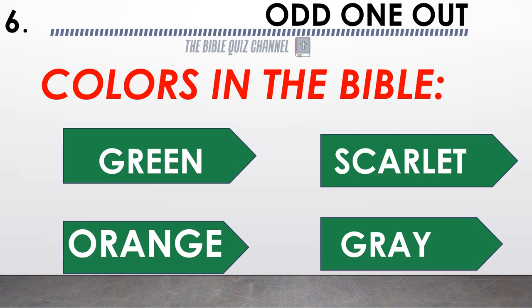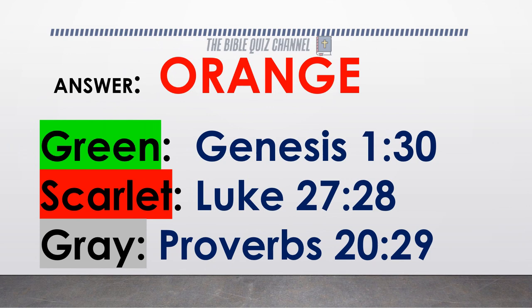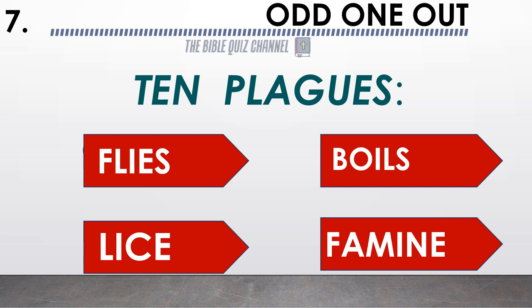Colors in the Bible — green, scarlet, orange, gray. Can you identify the odd one out? The correct answer is orange.